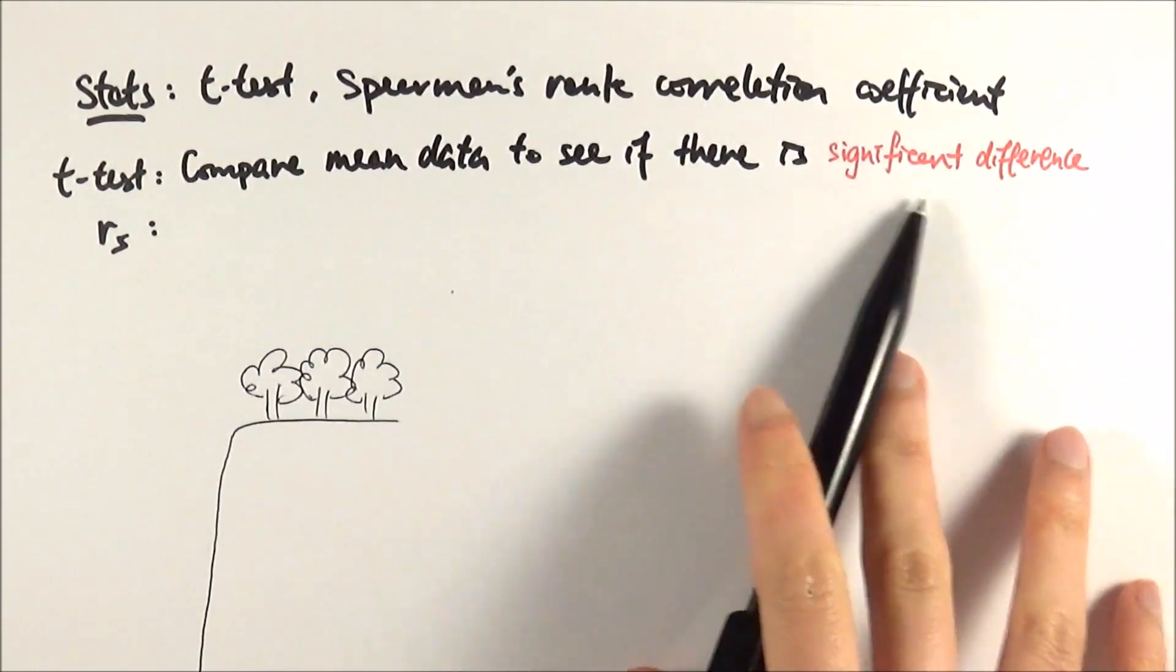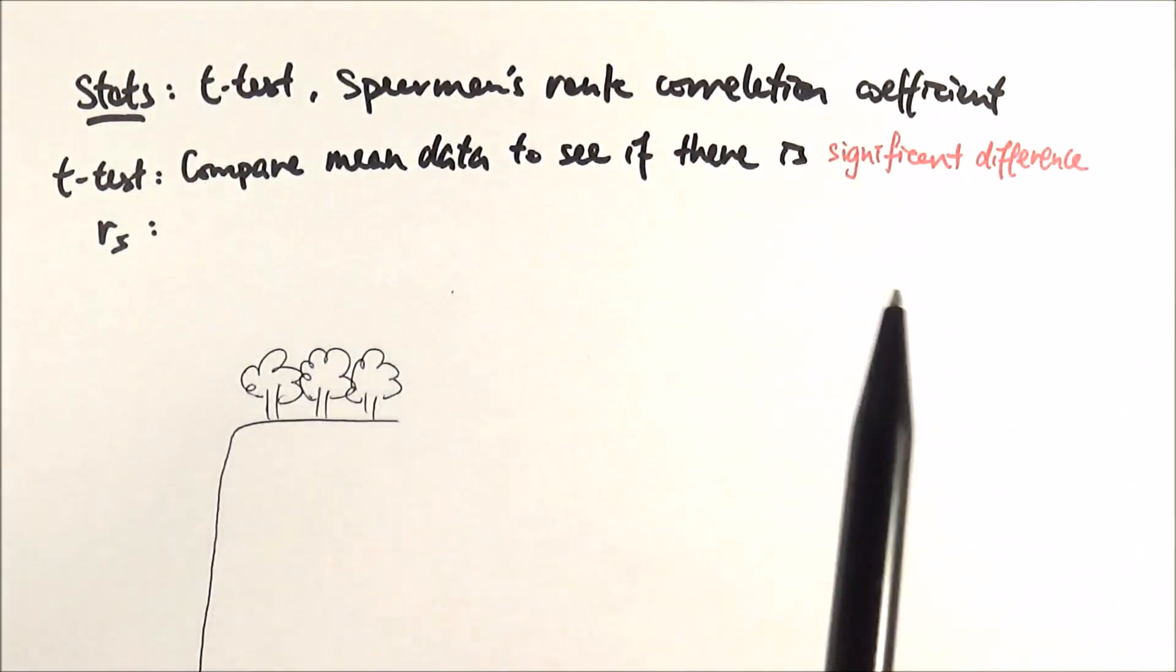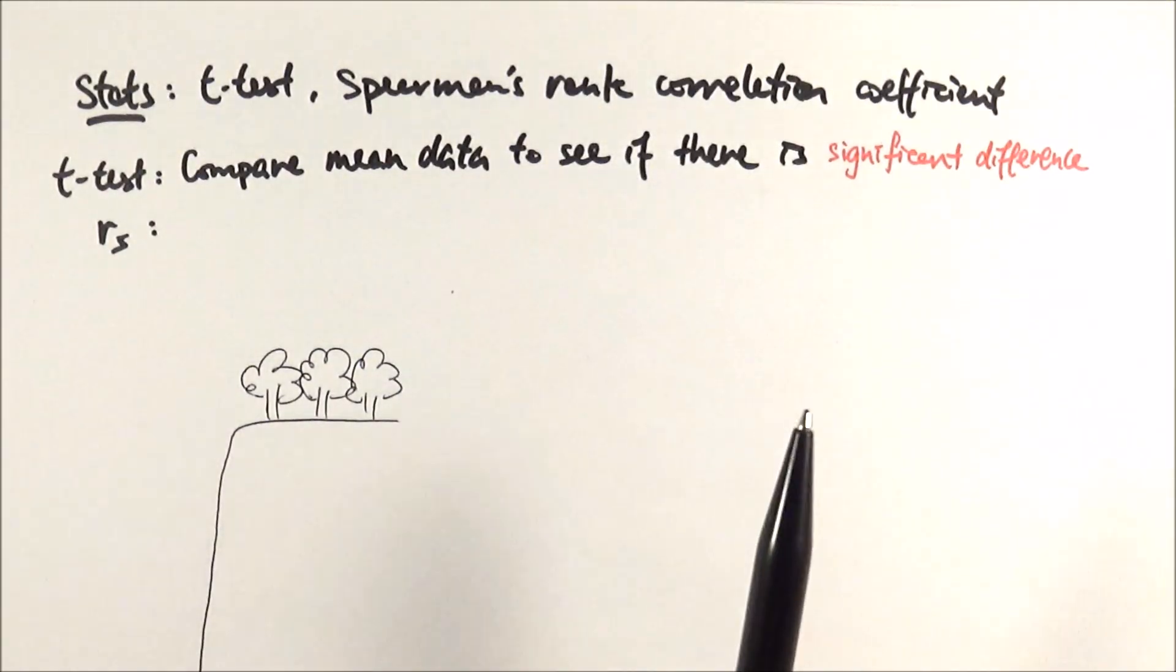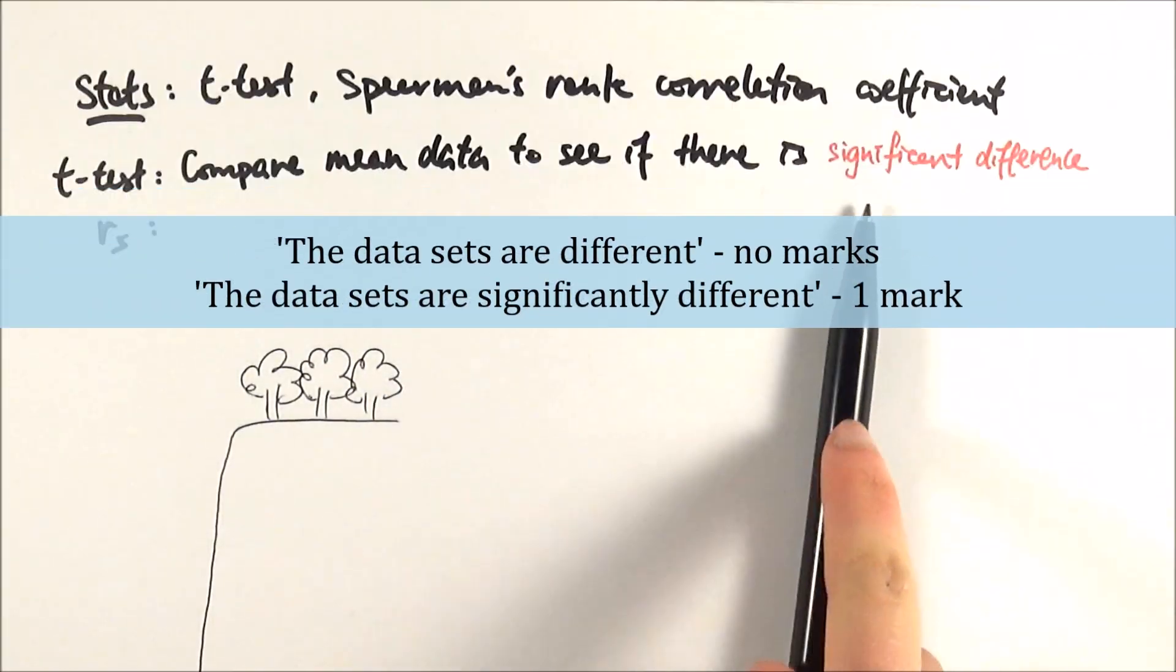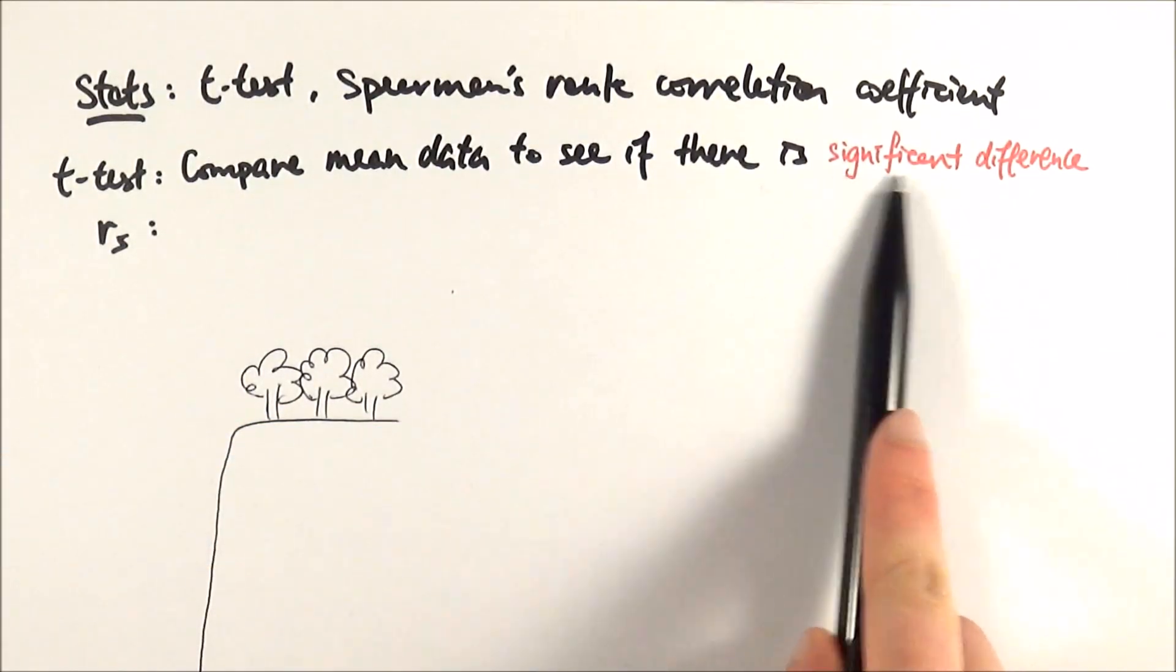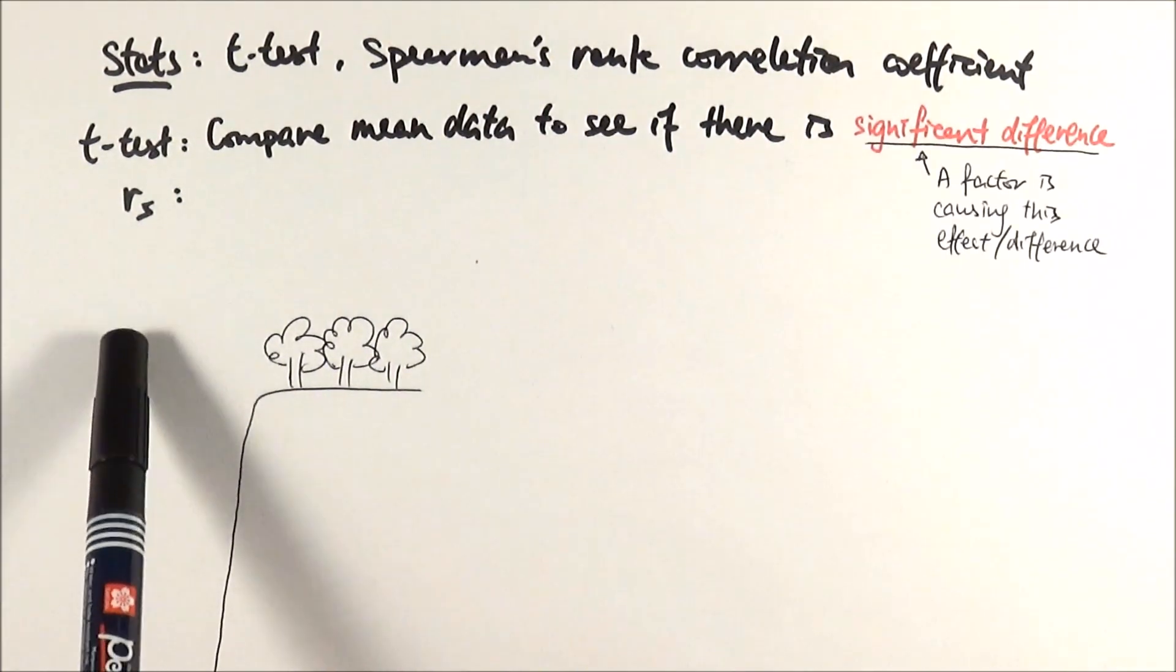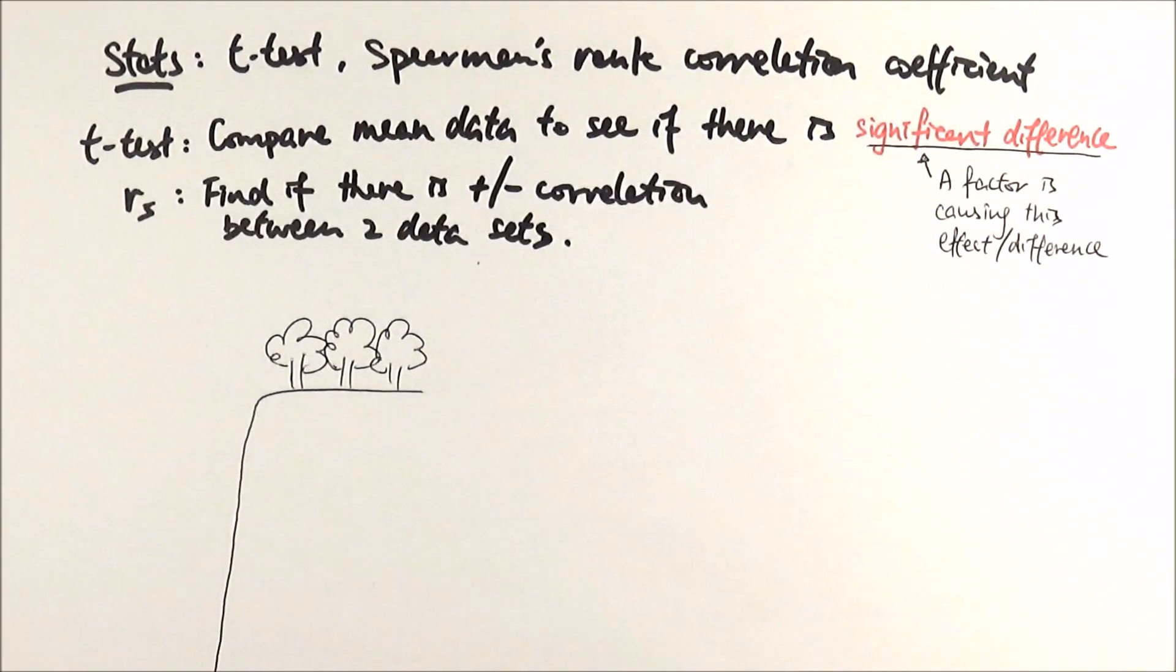This is a very important phrase to use in stats and biology. In all the exams, if there's a question on t-test, you have to include the word 'significant difference' to score the point. The reason is the word significant means that a factor is causing this effect or difference. Spearman's rank correlation coefficient is where we find out if there is a positive or negative correlation, or any correlation at all, between two sets of data.